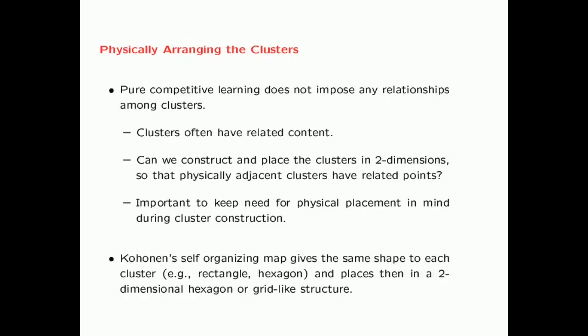This type of learning gives you a clustering of the data set. At termination, you have a set of neurons, and for each data point you can find its winning neuron and create clusters from your data set. This is exactly like prototype clustering where your neurons are like prototypes, and you are learning the weights of these neurons with competitive learning. However, pure competitive learning does not impose any relationships among the clusters.